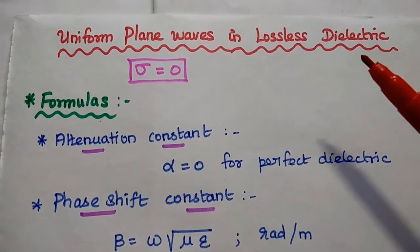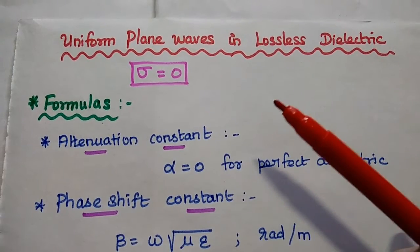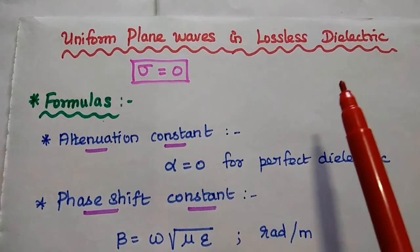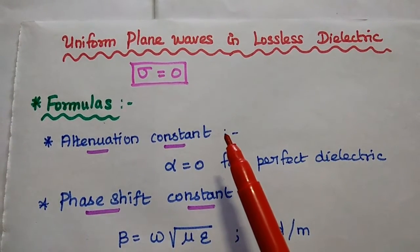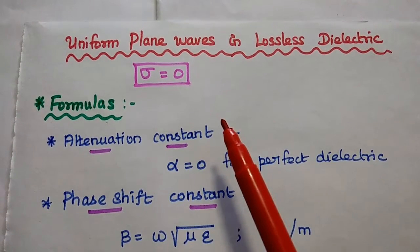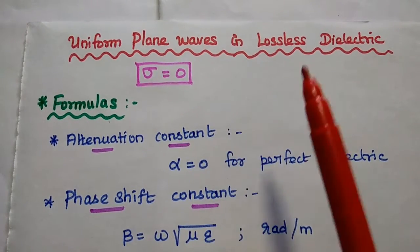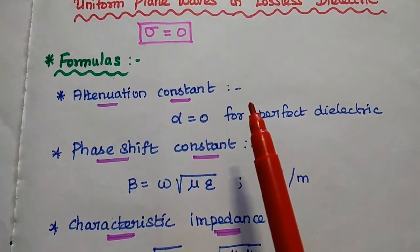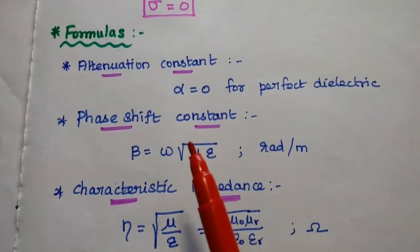Dear students, we are going to solve one important problem on uniform plane waves in a lossless dielectric medium. Lossless dielectric is also known as perfect dielectric. The condition for the lossless dielectric is its conductivity is equal to zero — that is, sigma equals zero. Before going to solve the problem, let's discuss the important formulas used.